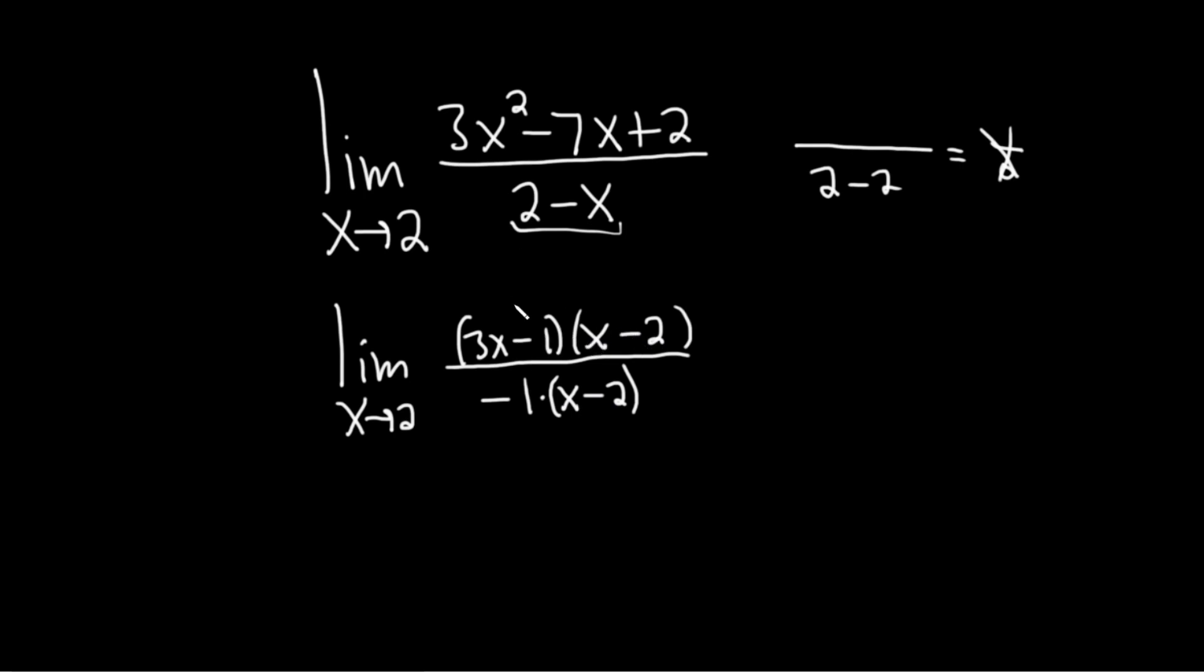So now let's actually perform the mathematics to check. 3x times x is 3x squared. That part's easy. Negative 1 times negative 2 is positive 2. That part's easy. What about the negative 7x? Well, the inner and the outer should give you the negative 7x. So this is negative x. And the outer piece is negative 2 times 3x, so negative 6x. When you add these, you get negative 7x. So yes, it does check.